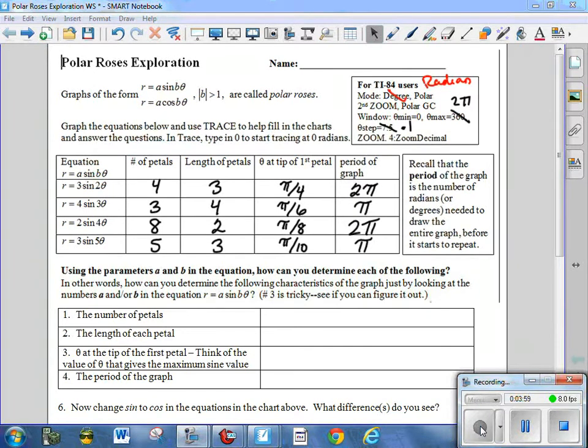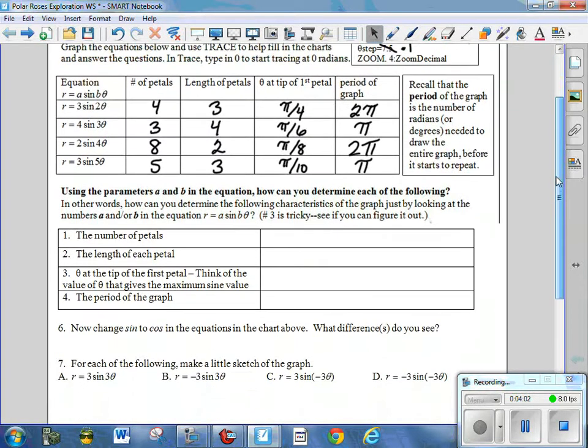Now, the next section asks you to, using the parameters a and b, which would be the 3 and the 2 here, the 4 and the 3, the 2 and the 4, those two numbers that are in, a being the number outside the function, b being the number that you multiply by theta. How can you determine, just by looking at the equation without actually looking at the graph, how many petals, what the length of the petals, and so forth are. So, once again, turn off the video for a second, at this point, and then see if you can figure it out, and then turn it back on and see if you're right.